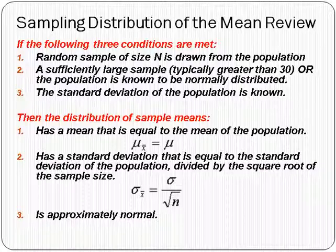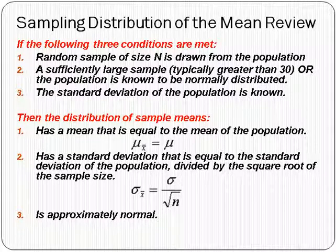Just a little review from class. What is a sampling distribution of the mean? You draw a number of samples from the population. For each sample, you calculate the sample mean, and then you plot those sample means. Those sample means will form a histogram. So a sampling distribution is a distribution — a histogram — of many sample means, all the same size, drawn from the population.